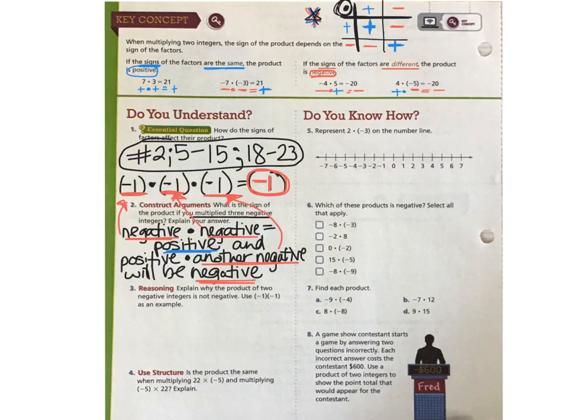Number 2, negative times negative times negative will always end up being a negative answer. Because when you multiply the first two negative numbers together, you would get an answer that is positive. And taking that positive answer times the third negative number will turn that product around and back to a negative answer. Number 5 is all about drawing this on the number line. Two times negative 3 means that I have two groups of negative 3. So I'm going to move back or to the left negative 3 two separate times until I land at negative 6.